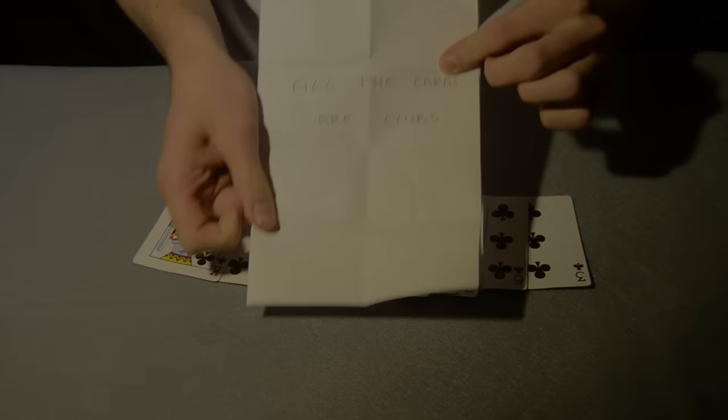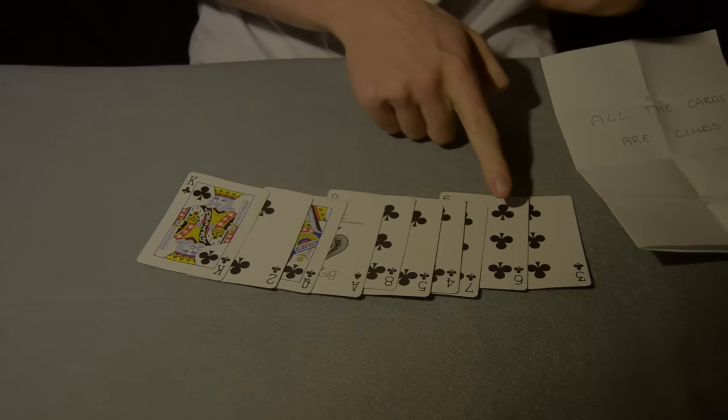He opens up the prediction one more time and it says, all the cards are clubs. The magician points to the cards, revealing that they are all clubs.